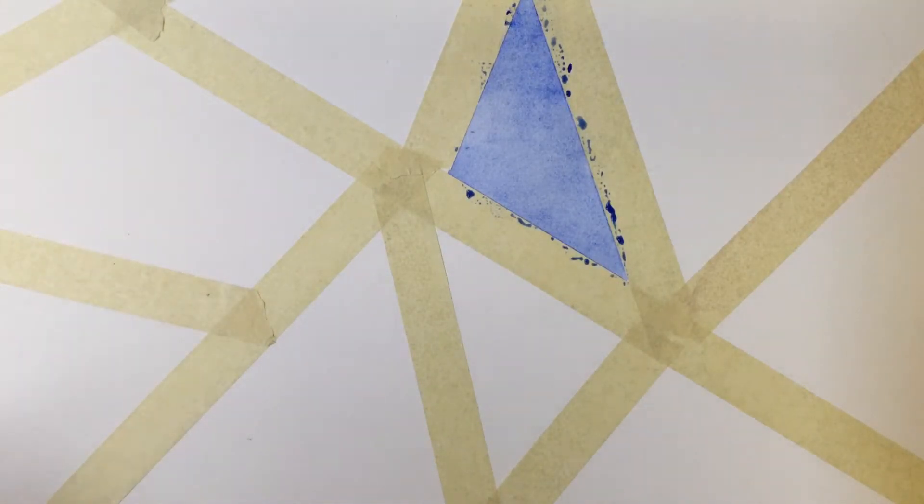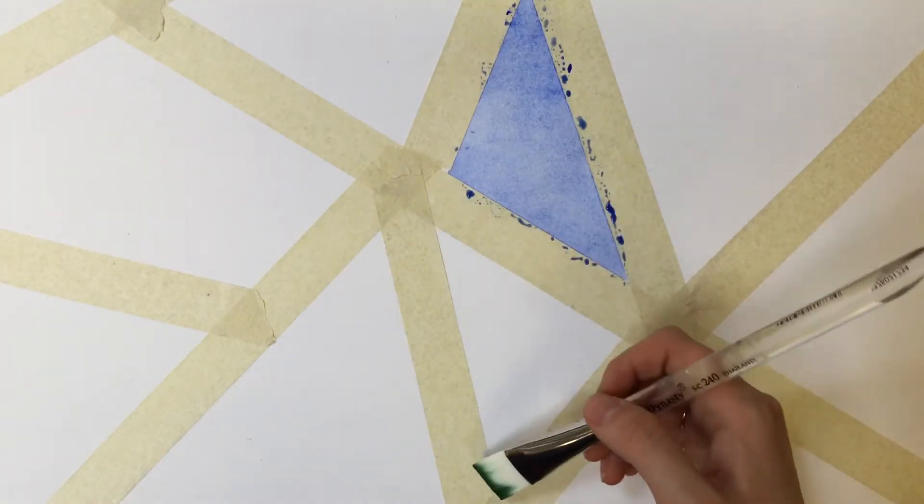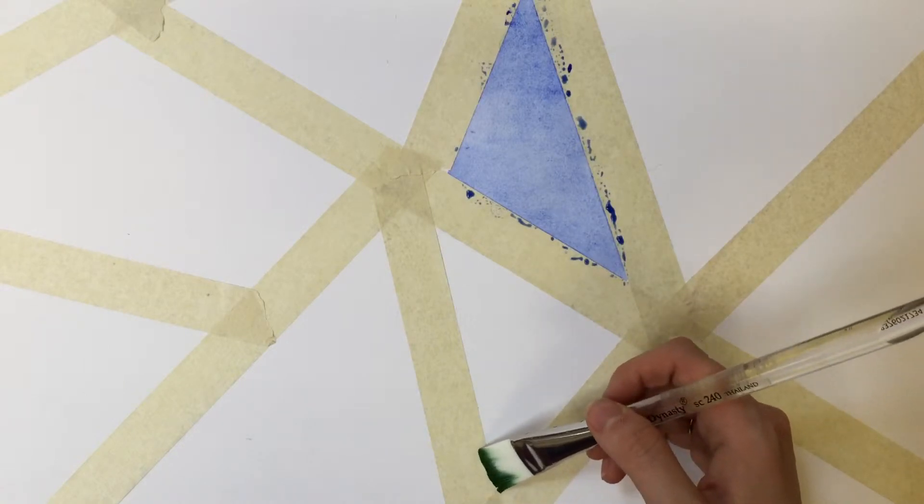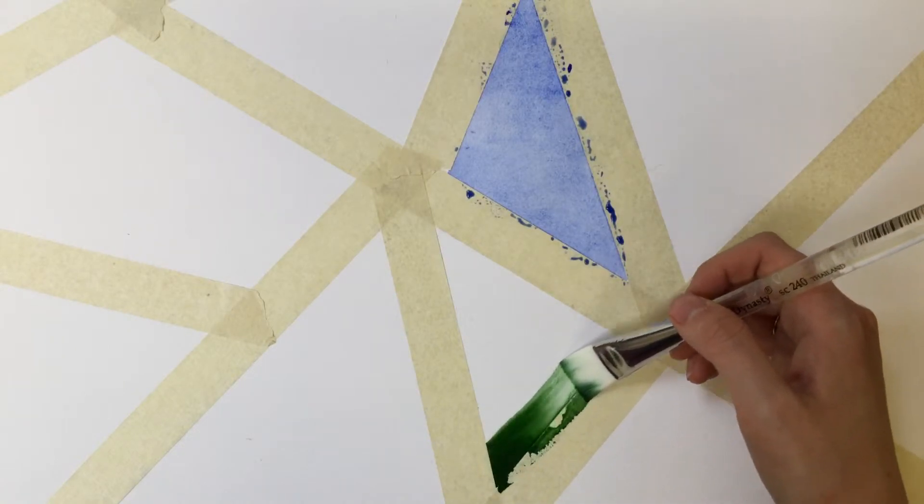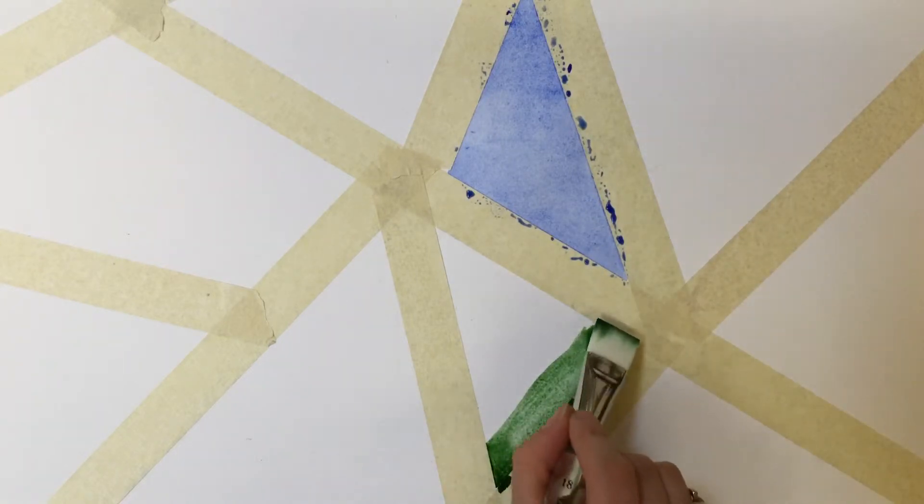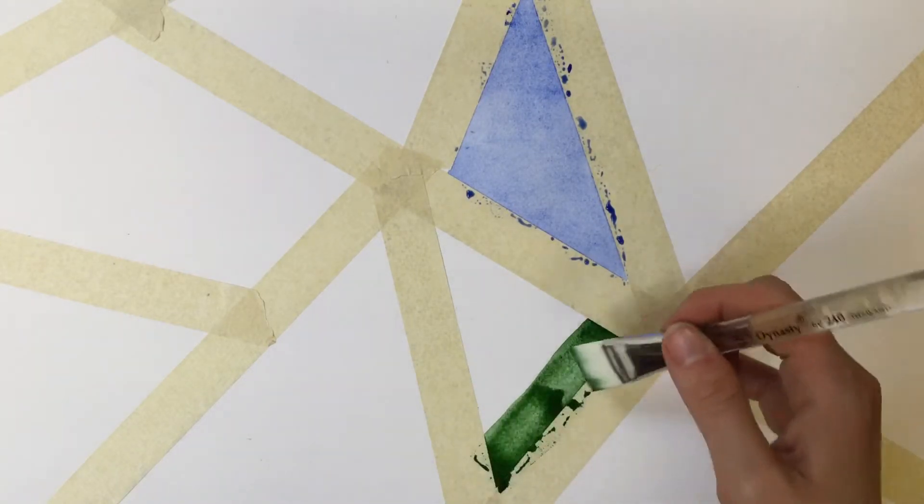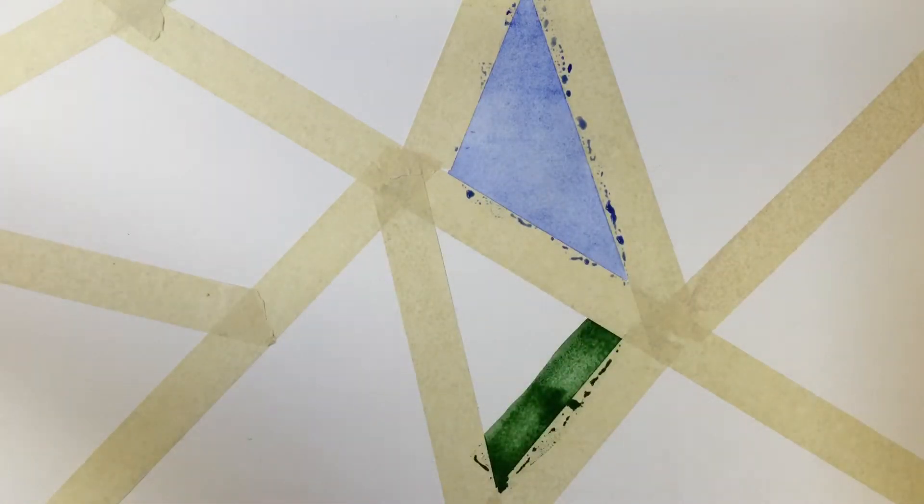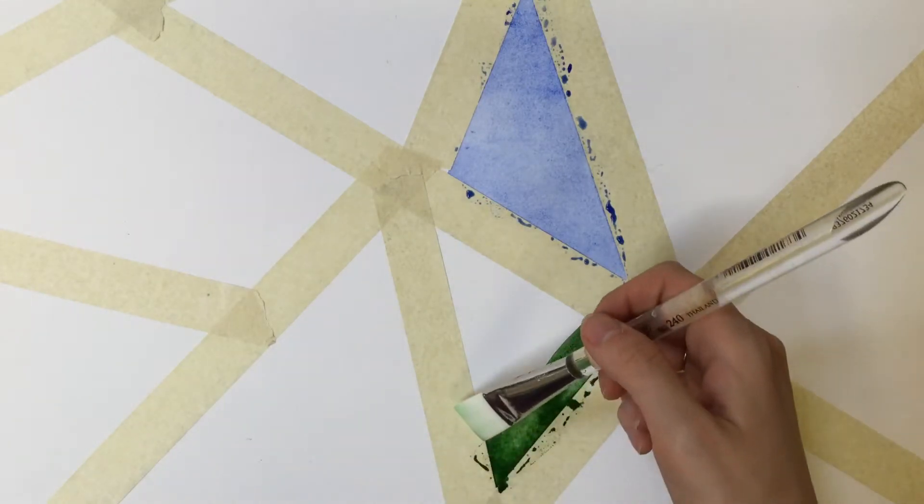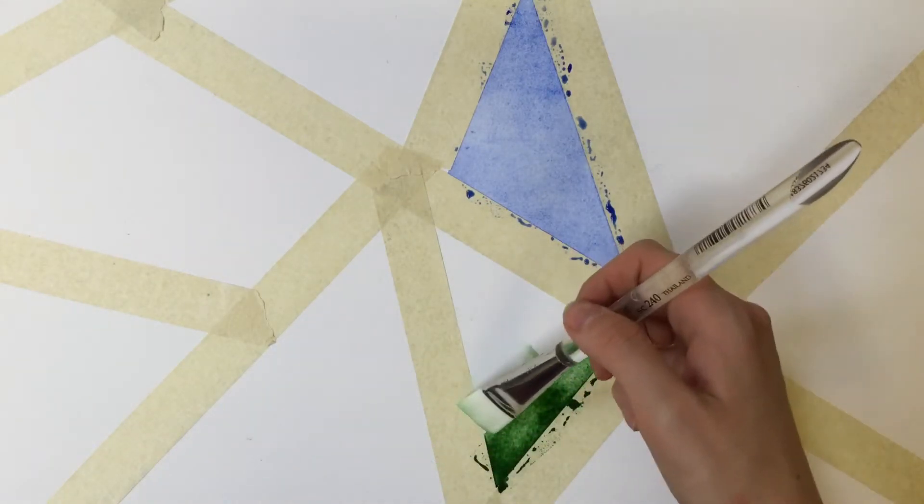Dipping my brush in the water, making sure my paint is saturated. Filling my brush, and then starting here we'll have it be darkest down here and fade to light. I start with just one streak across. Now I wash out my brush, and just with water I'm going to paint next to it.